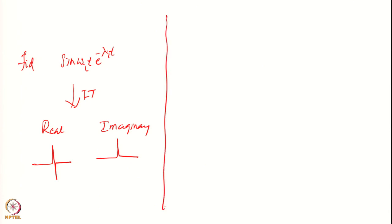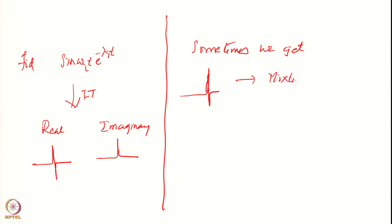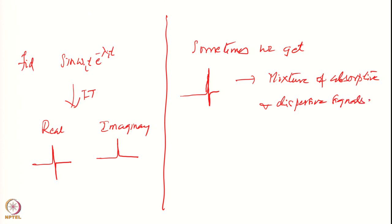Often we find that your signal is not exactly dispersive or absorptive - sometimes we get signals which are a mixture of absorptive and dispersive signals. This is known as phase error, and this has to be corrected.